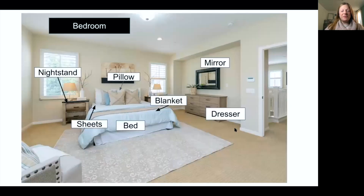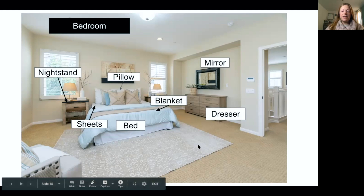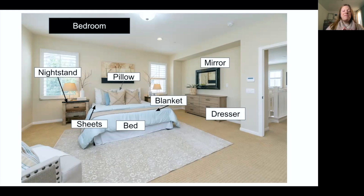In the bedroom there is a dresser, mirror, bed, blanket, sheet, pillow, and nightstand — and here is a rug. One more time: mirror, dresser, bed, sheet, blanket, pillow, nightstand.